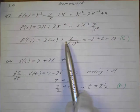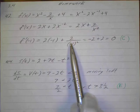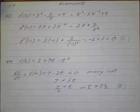So that's just going to be 2 times negative 1 plus 2 over negative 1 squared. That's just going to be negative 2, and negative 1 squared is 1 plus 2 is 0. So the answer was C.